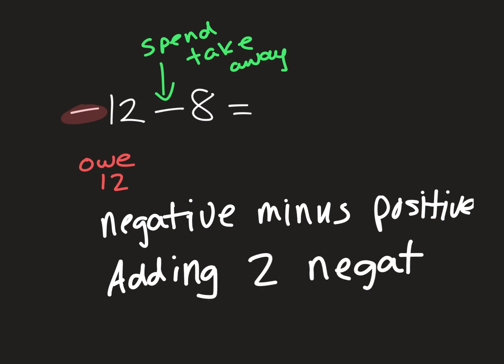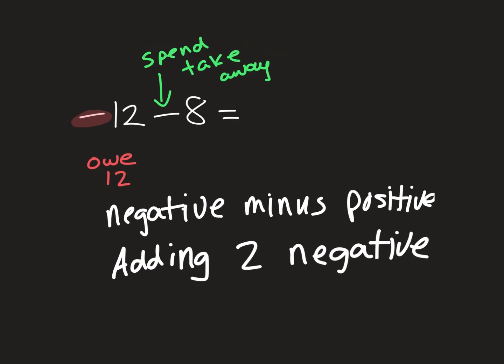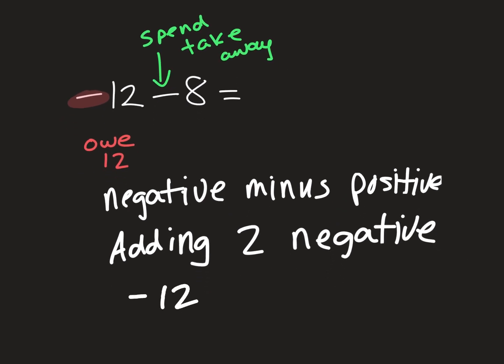Because I was already down negative 12 and now I've taken out eight more. So how much am I in the hole now? I'm now down to a total of negative 20.